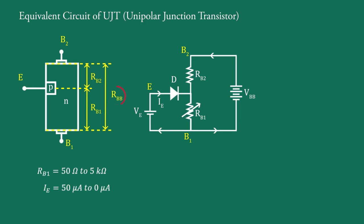The inter-base resistance RBB is the resistance between the terminals B1 and B2 when IE equals 0; that is, RBB equals RB1 plus RB2 when IE equals 0. The value of RBB generally lies between 4 kilo-ohms to 10 kilo-ohms.